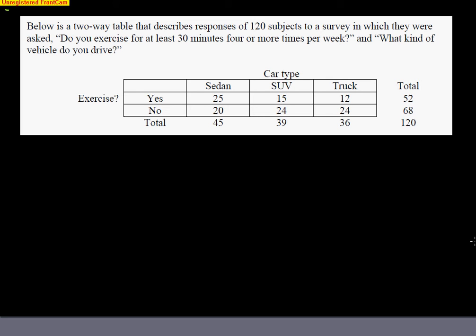There are tons of questions I can ask from a two-way table, but one you need to understand is: what two things are mutually exclusive? Exercise or not exercise — those two events are mutually exclusive because you can't do both. You can't say yes and no at the same time. Same thing with car type — sedan, SUV, truck — those are all mutually exclusive. You cannot have all three; one car cannot be a sedan, SUV, and truck all at the same time.